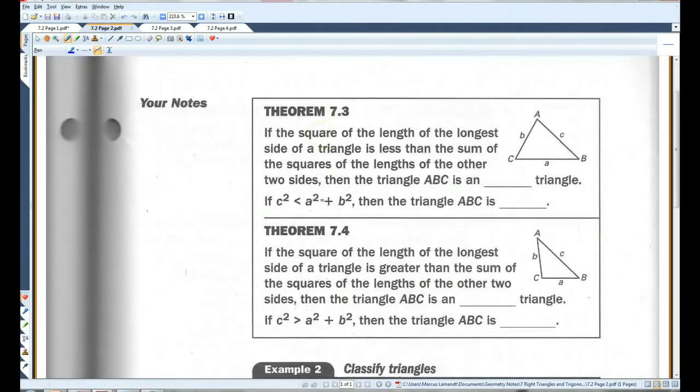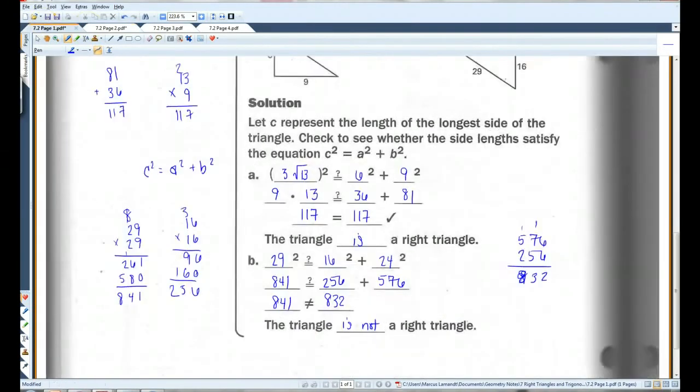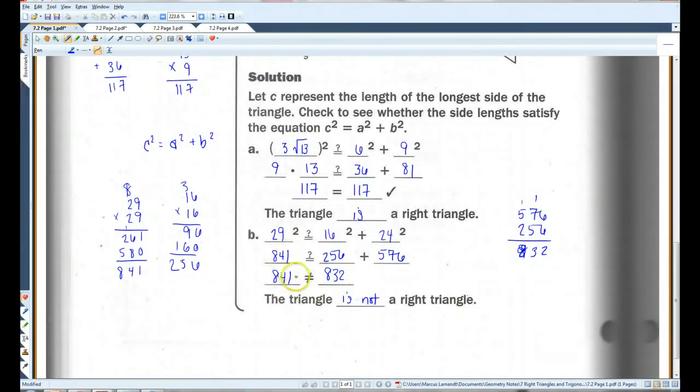Now, if the hypotenuse is smaller than the sum of the squares of the two sides, you have an acute triangle. If the hypotenuse, or the longest side, is bigger than the sum of the squares of the two sides, then it's an obtuse triangle. So if you take a look over here, the hypotenuse is bigger than the sum of the squares of the two sides, so this would be an obtuse triangle.